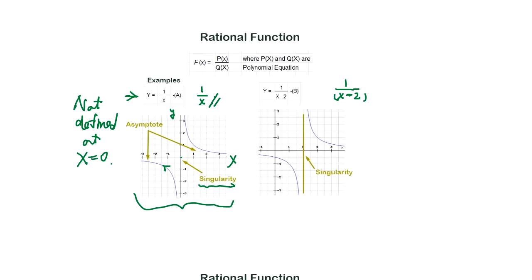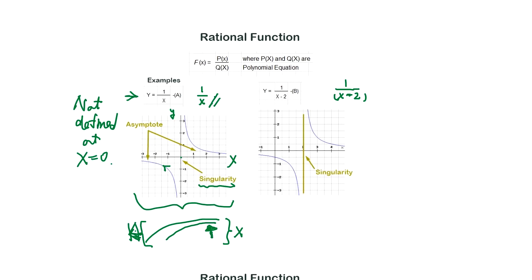The graph gradually gets close to some straight line — that's called an asymptote. And sometimes it's not just a straight line. Later when you learn differential equations you'll learn some functions which are asymptotic to a curved line. That kind of function cannot be expressed by a rational function — you need new definitions. So you have to know the basics of asymptotes, singularity, and the characteristics of rational functions.